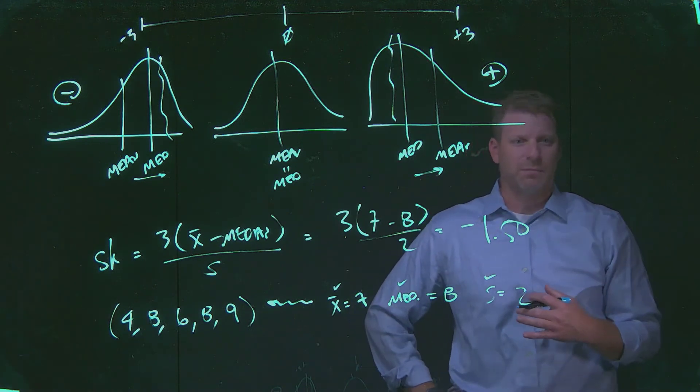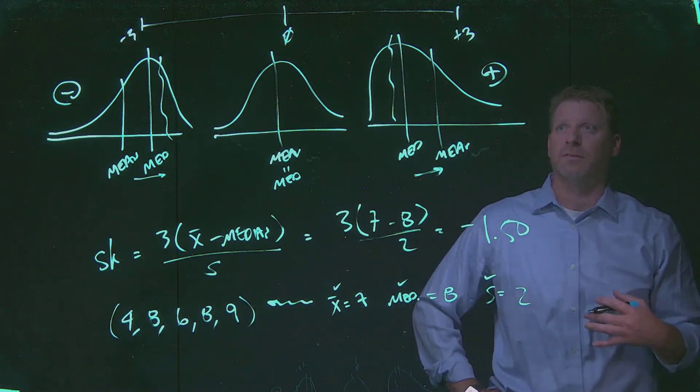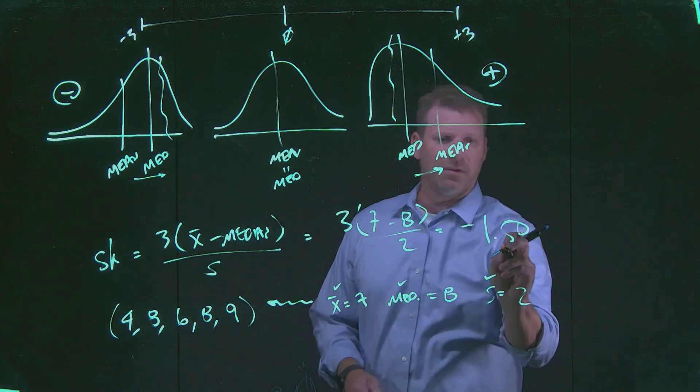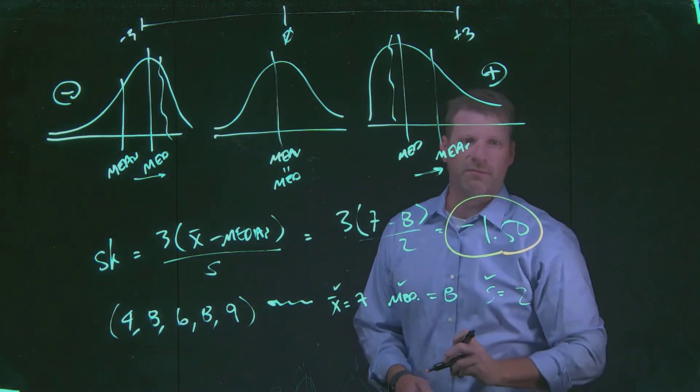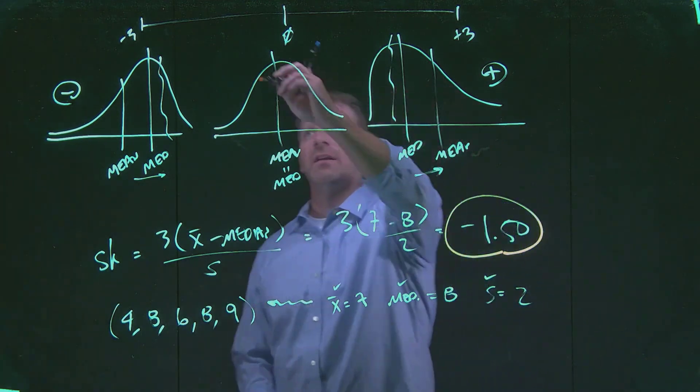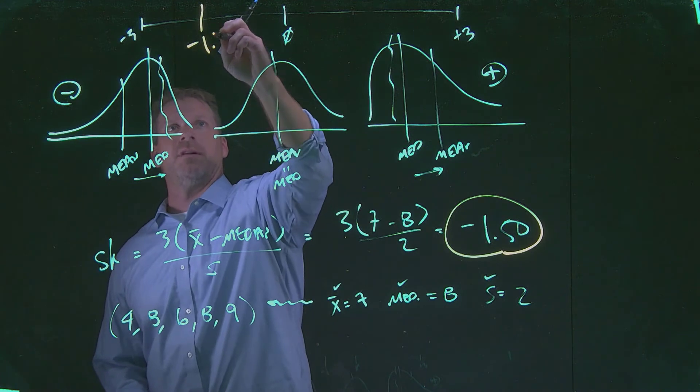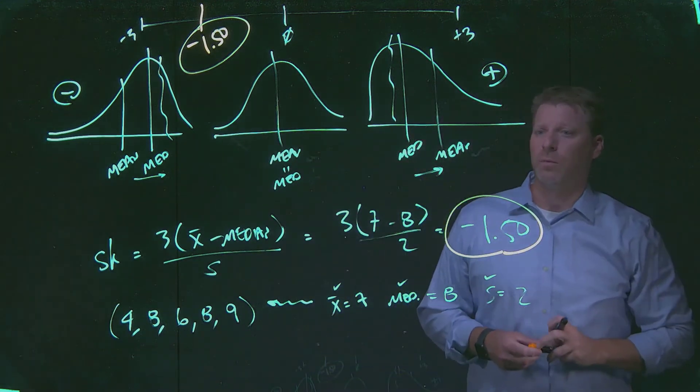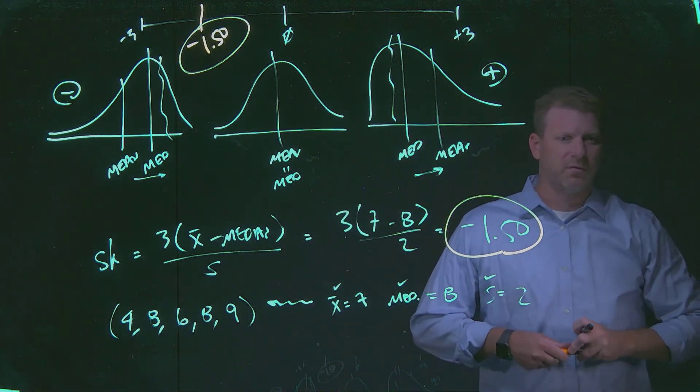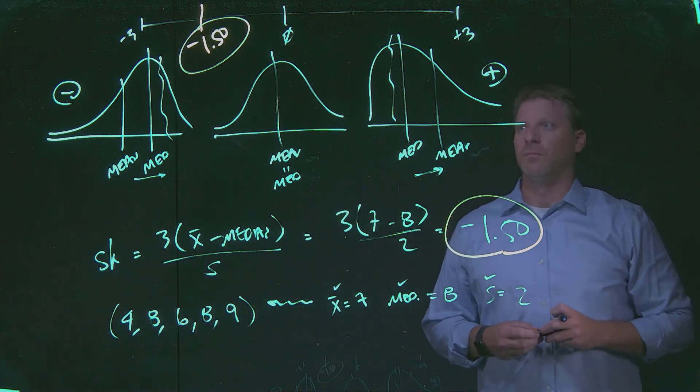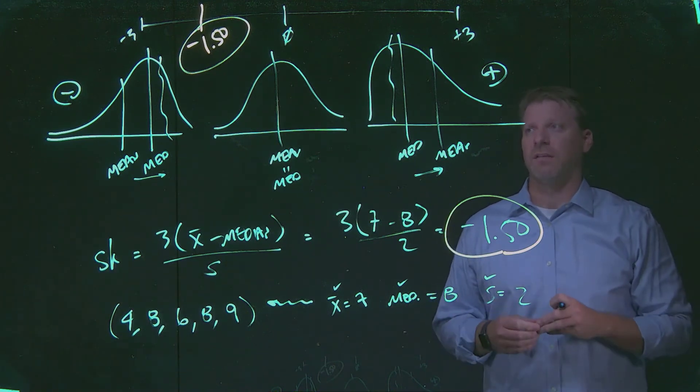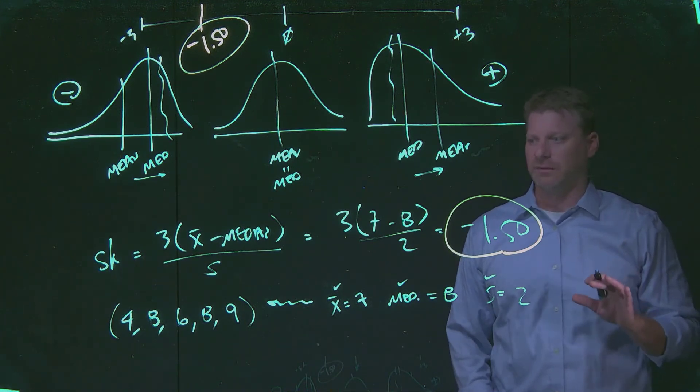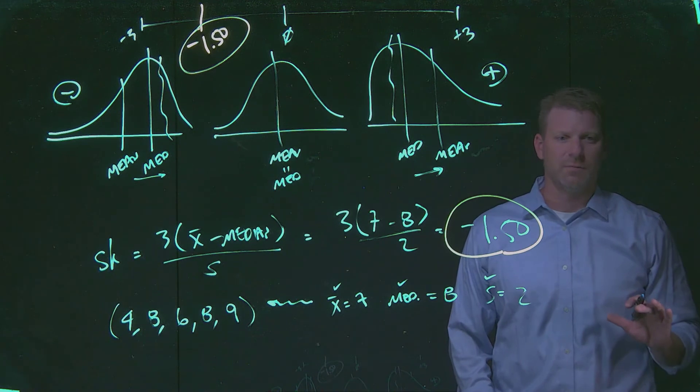Because we're early in the semester and because Pearson is a very simplistic measure, the only thing that we could do is take and evaluate this negative 1.5 and say where does it fit in our scale. If we're here at negative 1.50, we can't make a lot of statements about this, but we could certainly say given Pearson's coefficient of skewness, we see some fairly strong measure of a negative skewness within this set of data, understanding it's a simplistic measure and a very small set of data.